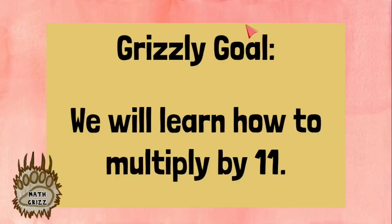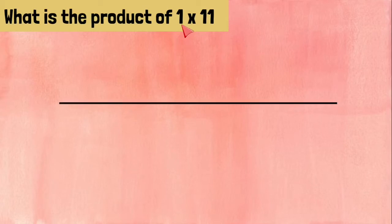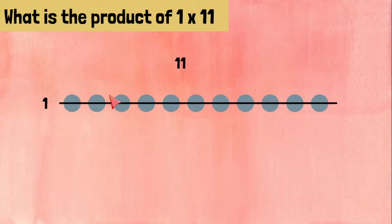Welcome back Math Grizz. Today we will learn how to multiply by 11. What is the product of 1 times 11? We will make an array. We will have one row with 11 counters on the row. We will label that 11. If we count up the counters, we know that 1 times 11 equals 11.